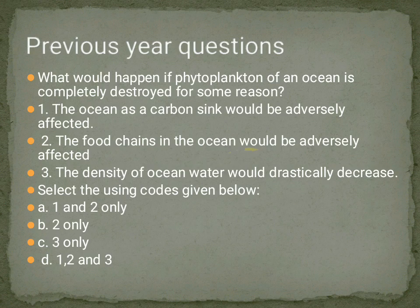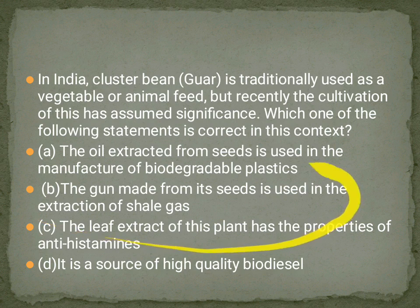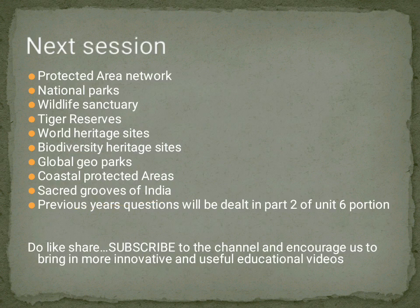Option 3 about ocean density — density depends only on temperature and salinity, so phytoplankton has no relation to ocean density. That is the answer. For the cluster bean question, the answer is the gum prepared from its seeds. In the next session we are going to discuss protected area networks.